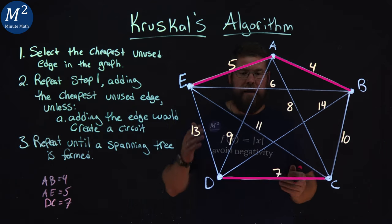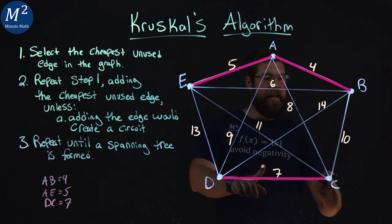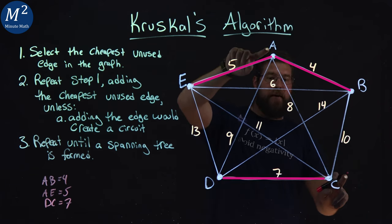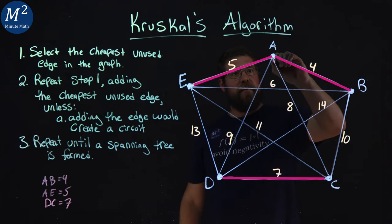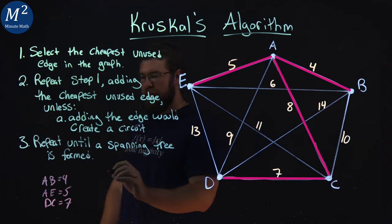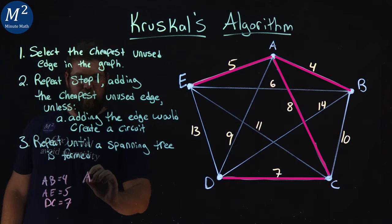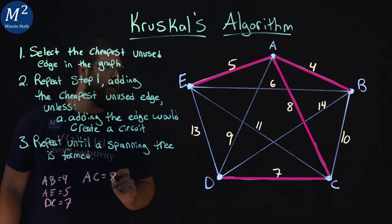Next number I see, I can't use six again. We already have seven. I see an eight. A to C. Does that create a circuit? Nope. Doesn't create a circuit. It's the cheapest one. So I'll highlight that. A to C here. A to C is an eight right there.